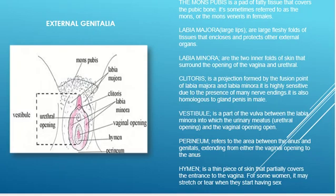We also have the clitoris, which is a projection formed from the coming together of the labia majora and the labia minora. This is the most sensitive part of the external genitalia because of the presence of numerous nerve endings, approximately eight thousand in number. The clitoris is homologous to the glans penis in males, which is also the most sensitive part of the penis, having approximately four thousand nerve endings.